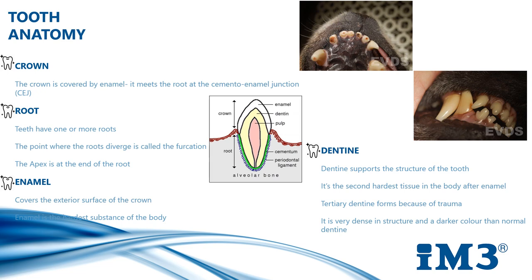Tertiary dentine forms because of trauma. It's very dense in structure and a darker colour than normal dentine. Dogs that tend to carry tennis balls or abrasive items usually wear down the crown and show tertiary dentine. This top image is from a case which shows a brownish reparative dentine. In the bottom image we can see a production of tertiary dentine caused by slight attrition on the mesial aspect of the mandibular canine.